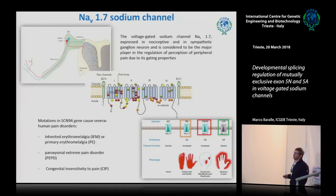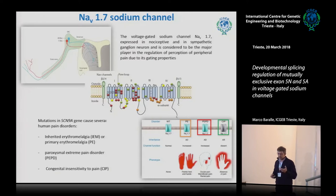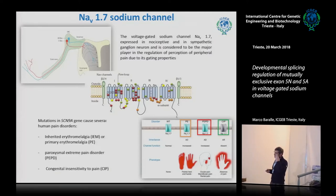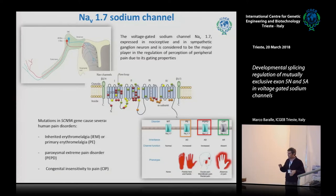Several mutations in the alpha subunit have been correlated to various pain pathologies. Inherited erythromelalgia patients have very painful palms and bottoms of their feet, especially when stimulated by heat. Paroxysmal Extreme Pain Disorder patients have hot flushes, ocular pain, and rectal pain. Most interestingly, patients with mutations resulting in a non-functional channel — congenital insensitivity to pain — are completely insensitive to pain. These people feel no pain.